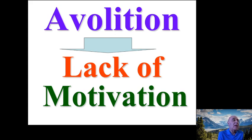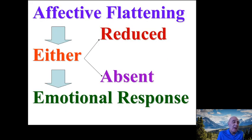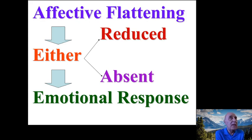Another negative symptom is abolition — there is a lack of motivation; the person is not motivated and doesn't like to do anything. Affective flattering is associated with reduced or absent emotional response. Normal, healthy people have emotions — they feel happy, sad, love, and cry — while people with schizophrenia have reduced or completely absent emotions.